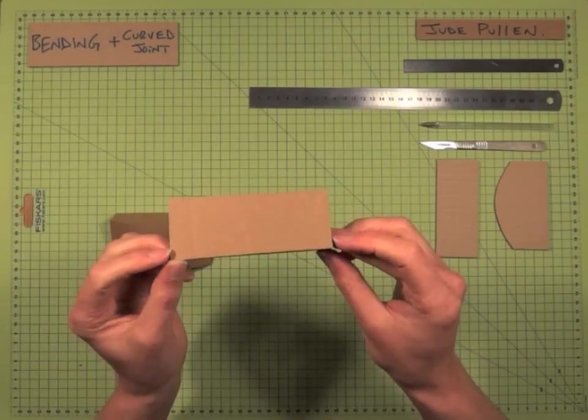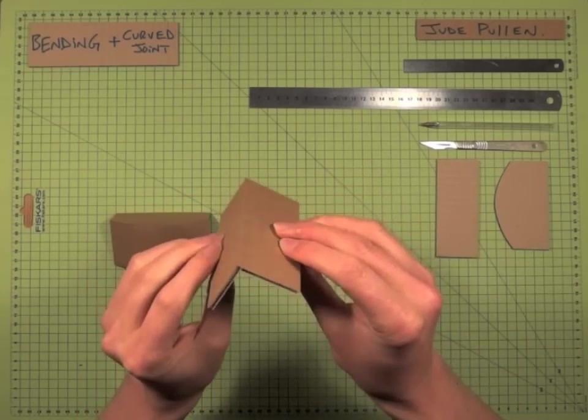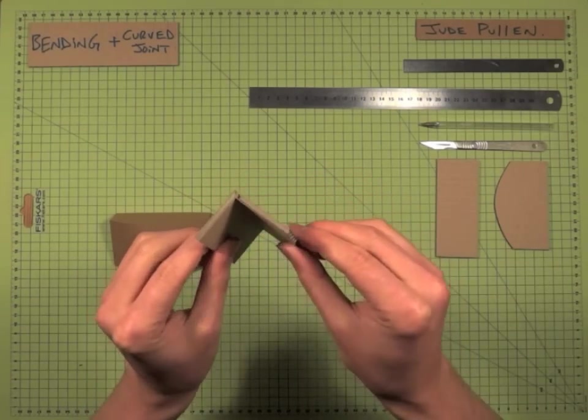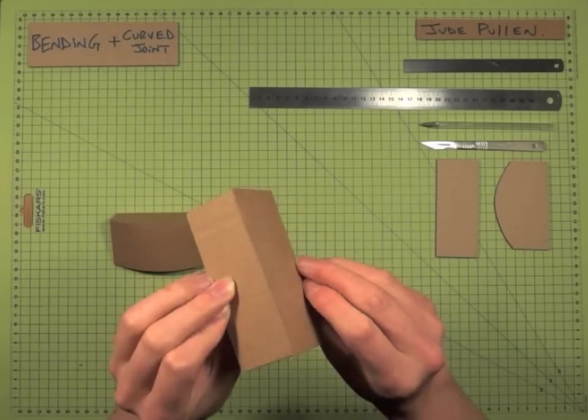Previously I had shown you how to make a 90 degree joint where it recesses into the other piece of the card so you get a nice clean edge like so.